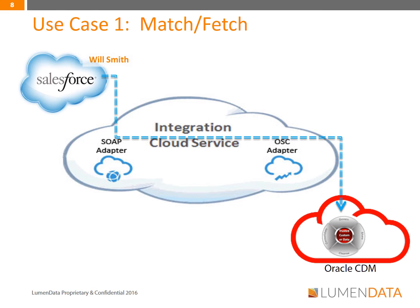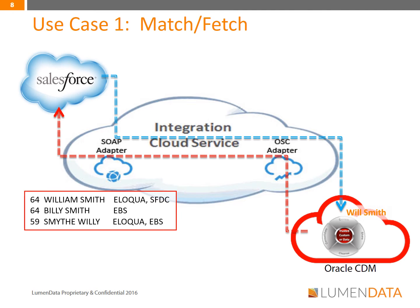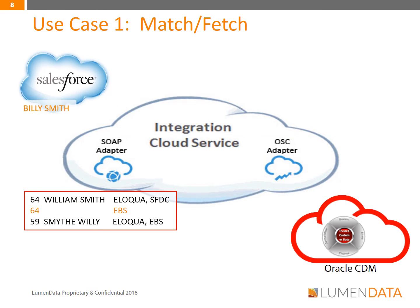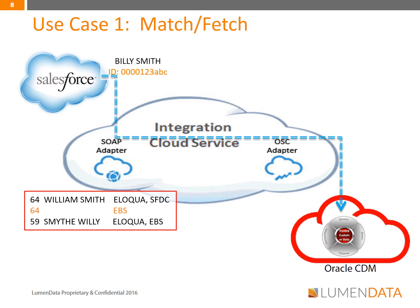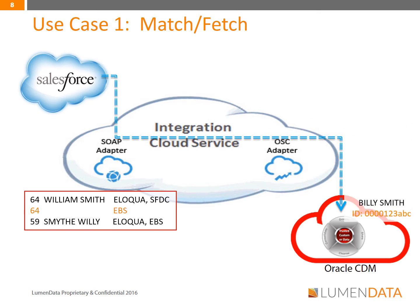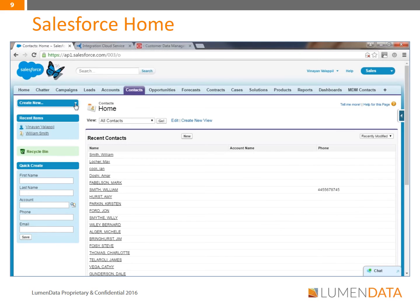The record will be sent through the Integration Cloud Service to CDM for a deduplication check. CDM will respond back with a similar-sounding list of names — here we get three results along with the match score and the source system from which each originated. Let's say that Billy Smith is the same customer as the one we're trying to create a record for. Instead of creating a new record in Salesforce, we import Billy Smith from CDM. Salesforce creates a unique ID for this record and then syncs this ID into CDM so that CDM will also have the information from Salesforce.